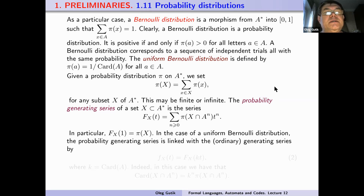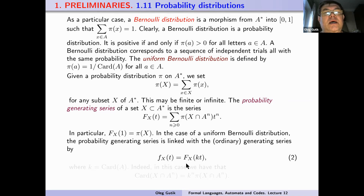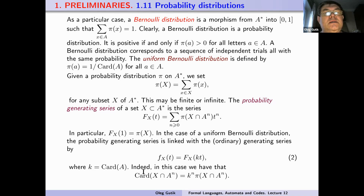In particular, f_X(1) is equal to p(X). In the case of a uniform Bernoulli distribution, the probability generating series is linked with the ordinary generating series by the following formula: f_X(t) equals f_X(kt), where k is the cardinality of the alphabet A. Indeed, in this case the cardinality of the intersection X ∩ A^n, which is the count of words in X of length n, gives k^n times p(X ∩ A^n).